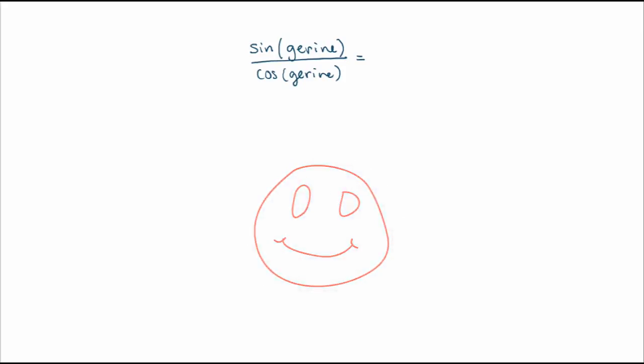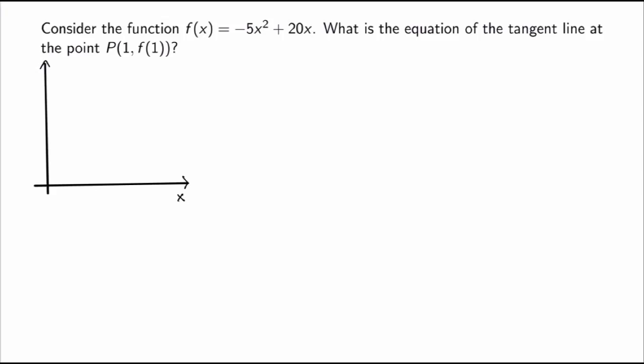What I want to do in this video is go through the steps of a typical tangent line problem. Consider the function f(x) = -5x² + 20x. What's the equation of the tangent line at the point (1, f(1))?